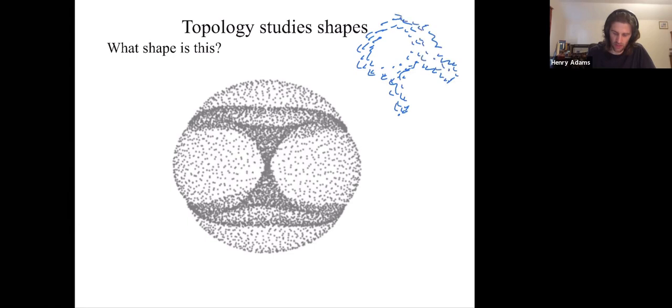Each little dot is a data point and I'm looking at the collection of all of these data points. Well, what is the shape of this data set? You might say it looks like a single loop with two flares sticking out.